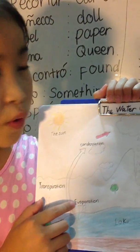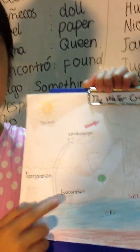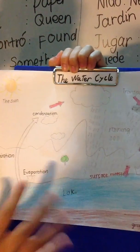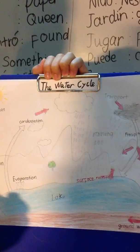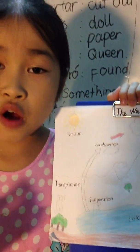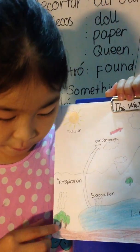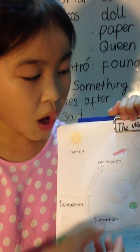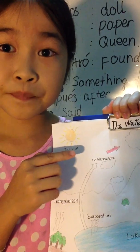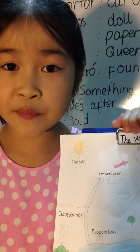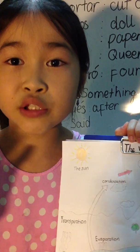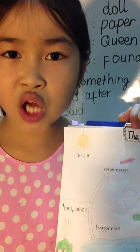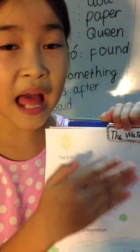The first stage of the water cycle is evaporation. Evaporation means that the water from the lake, the pond, the river, the ocean, and even the plants — the water vapor goes up to the sky. And when all of that water vapor cools down, it turns into water droplets and comes together to form clouds.